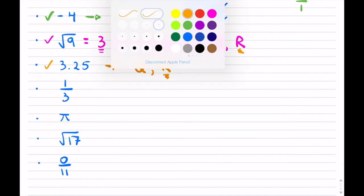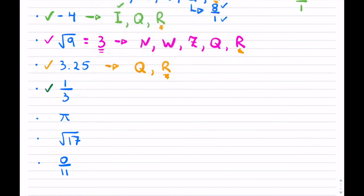The next example, 1 over 3, we can't really simplify in any way. We have an integer on top, an integer at the bottom, so it is rational and real, and it can't be anything else.